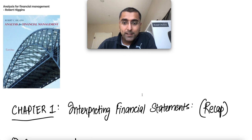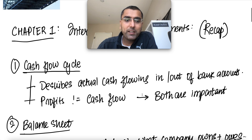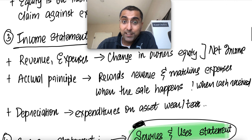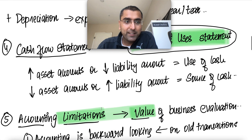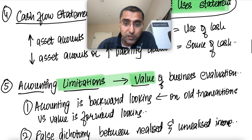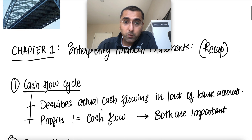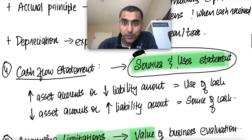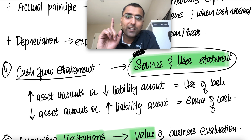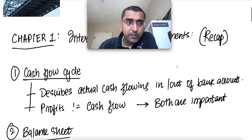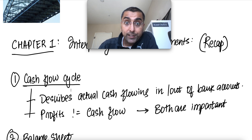Chapter one is a recap of accounting 101. It covers cash flows, the cash flow statement, balance sheet, income statement, shareholders' equity, and the limitations of accounting. It also introduces a new concept called the sources and use statement, which may not have been covered in a standard accounting course.